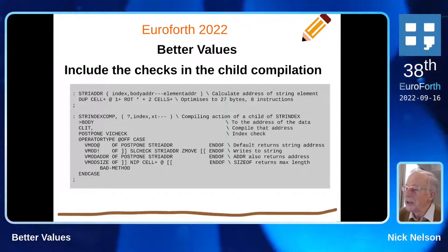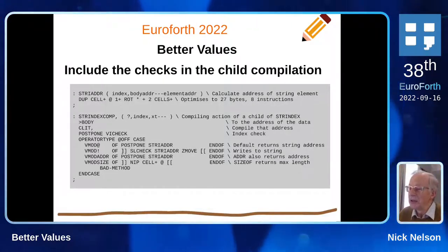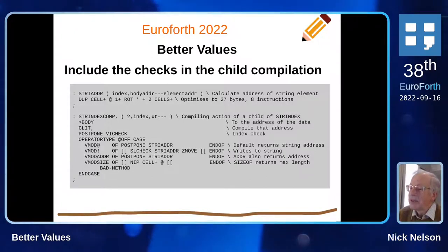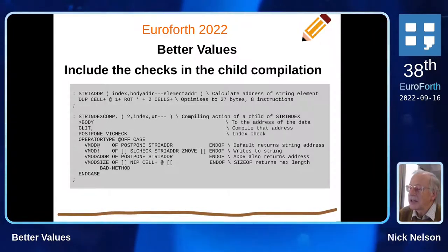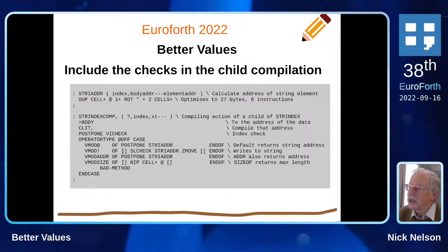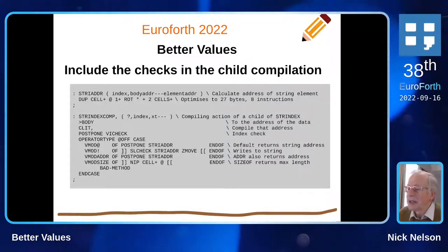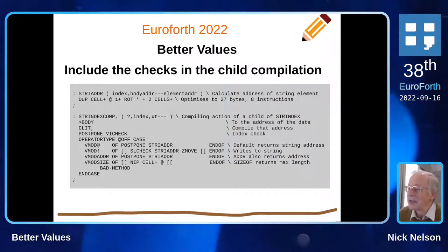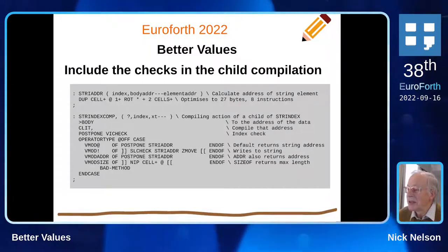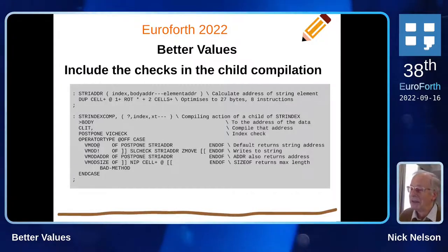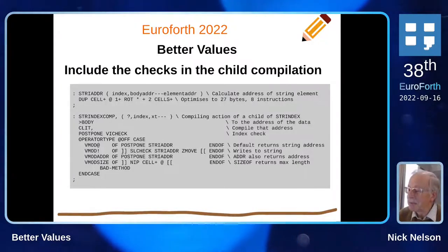We now include the checks in the child compilation — 'strindex comma'. What we've done is separated the address calculation so that it's external. I checked that on the optimizer as well, and although that looks like a complicated little form — 'dot cell plus fetch, one plus rot, all the rest of it' — the VFX optimizer actually munches that down to only eight opcodes, which is remarkable. So that's put the checks back in.